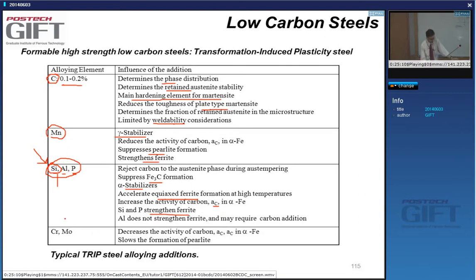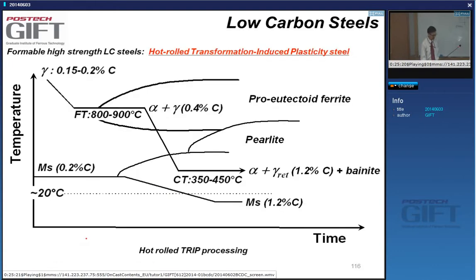Manganese is an austenite stabilizer, strengthens ferrite, and suppresses pearlite formation. Very important for TRIP steels is the addition of silicon, aluminum, and phosphorus — in particular silicon. In contrast to DP steels, silicon is added here to suppress cementite formation. Aluminum and phosphorus also have this effect. They are all ferrite stabilizers, accelerate ferrite formation, increase the activity of carbon, and are very good at strengthening ferrite.